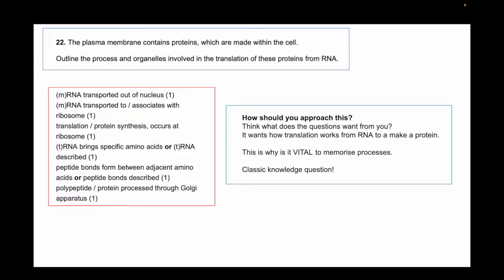It says outline the process and organelles involved in the translation of these proteins from RNA. This is why you need to know your processes, because if you don't know how translation occurs, then you can't answer it. How would you approach this? Think to yourself what does the question want from you. It wants how translation works from RNA to make a protein, so write down the steps. The more detailed the better because that equates to more marks. One point that you said that is a step in this process might not be in the mark scheme for some odd reason. That's why it's always important to write more than expected, but don't overfill. Just write enough and maybe a bit more.